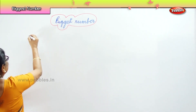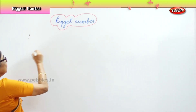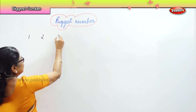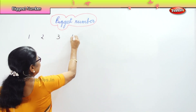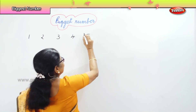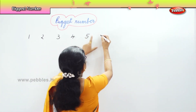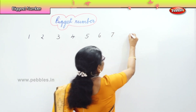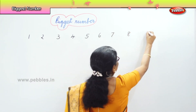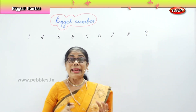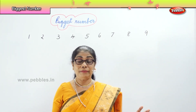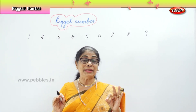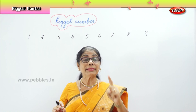When you say a number, you say one, then two, three, four, five, six, seven, eight, and nine. Nine numbers we have. These are called single digit numbers.